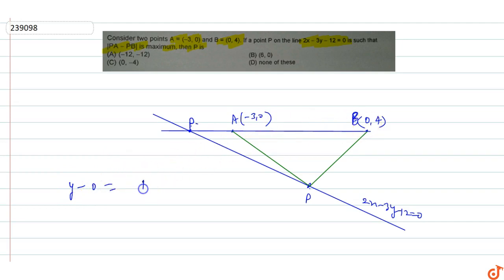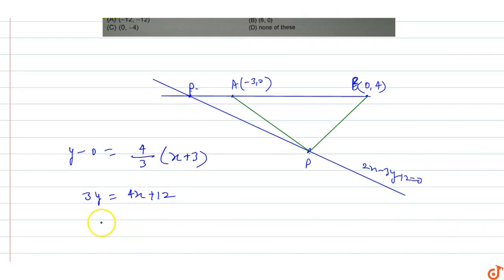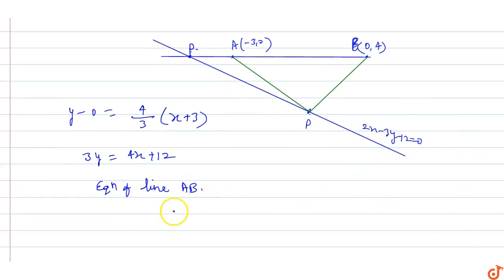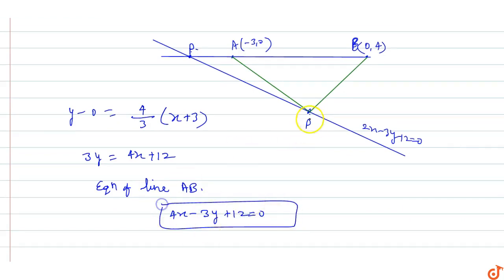The slope gives us 4 upon 3 into x plus 3, so this equals 3y equals 4x plus 12. The equation of line AB is 4x minus 3y plus 12 equal to zero.